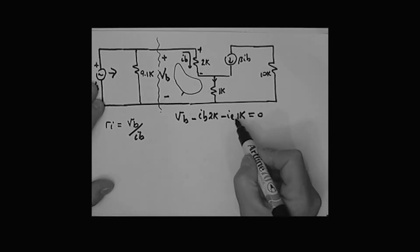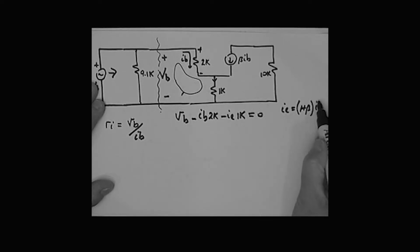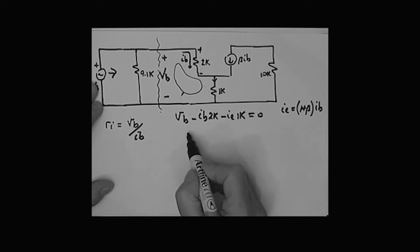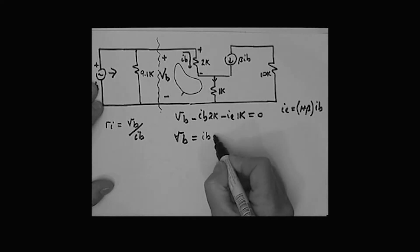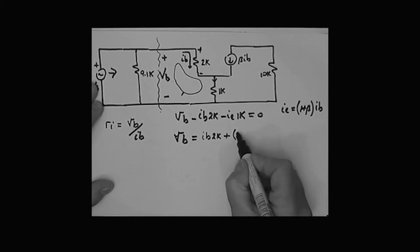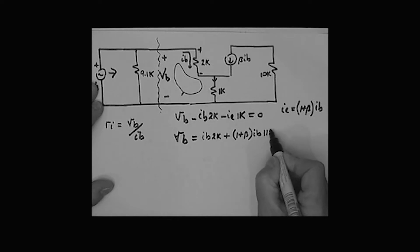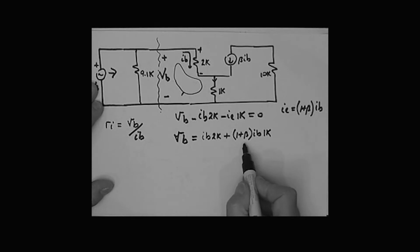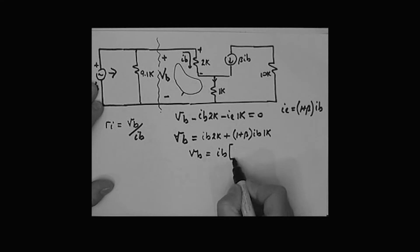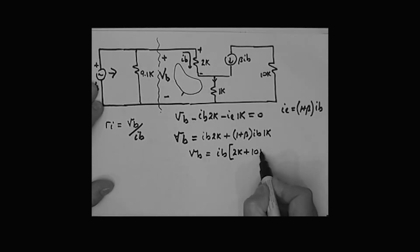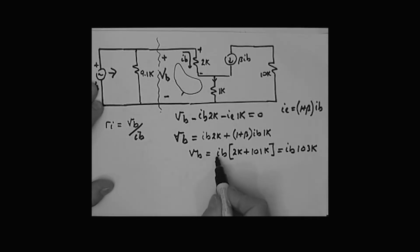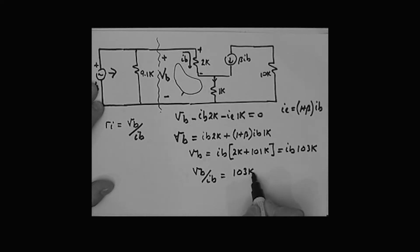I know the I_E term: I_E equals (1 + beta) times I_B. Substituting that in and rearranging, V_B equals I_B times 2k plus (1 + beta) times I_B times 1k. Factoring out I_B: V_B equals I_B times the quantity 2k plus 101 times 1k - since beta is 100, that's 101k - giving V_B equals I_B times 103k.